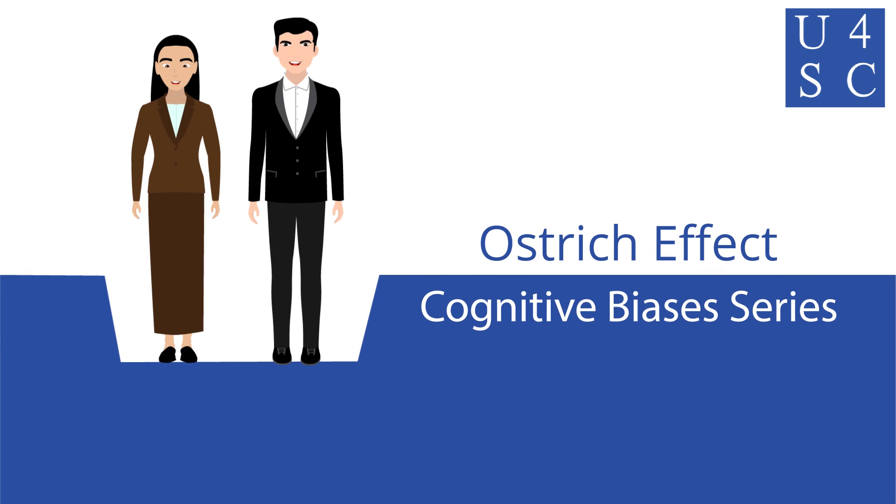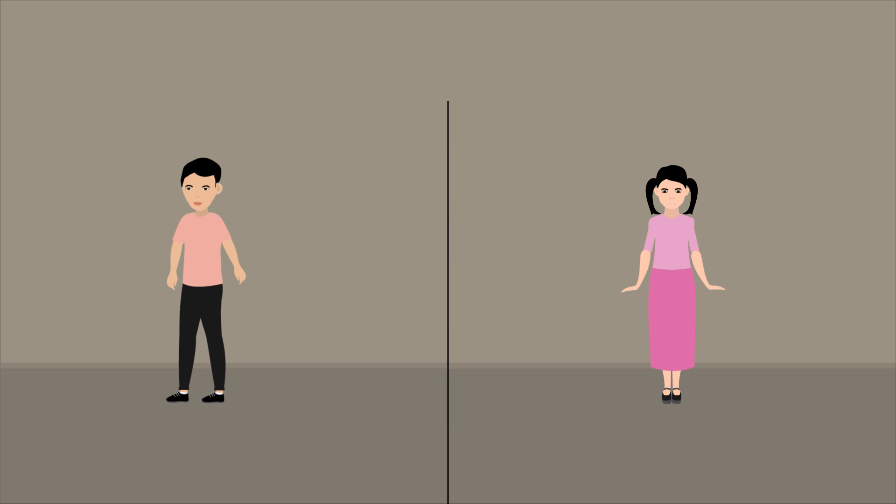Academy for Social Change presents the Ostrich Effect. Have you ever avoided information that you didn't want to know, even if it was really important?